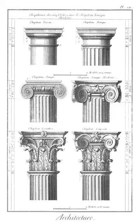Leon Battista Alberti in his De Re Aedificatoria, in English On the Art of Building, mentions the composite order, calling it italic.